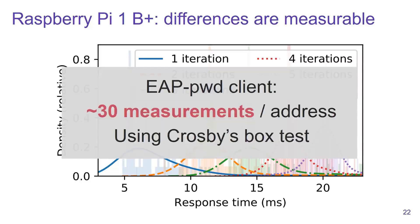Against an EAP-PWD client, we only need 30 measurements to determine how many iterations are being executed when we use Crosby's box test to filter out noise. So that covers the case of the EAP-PWD algorithm.